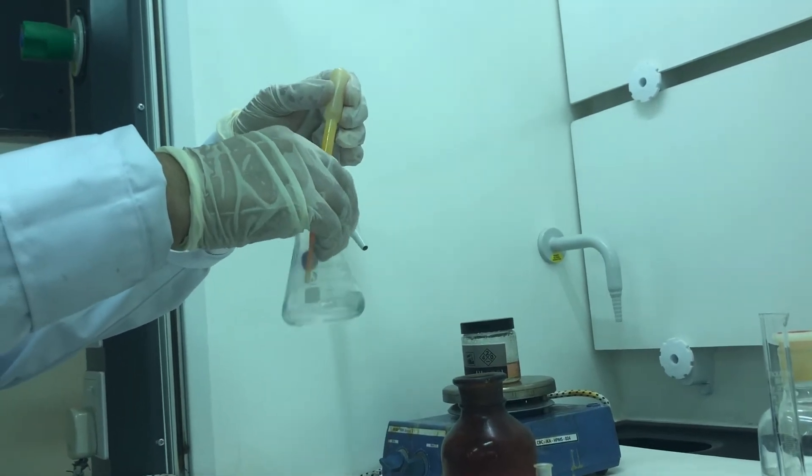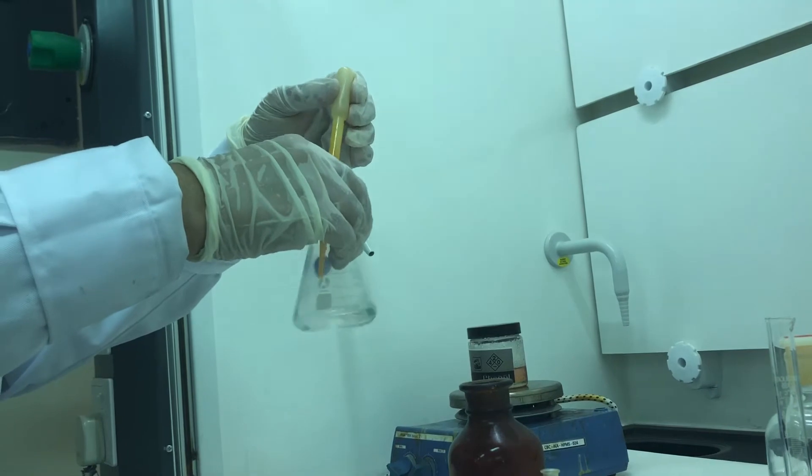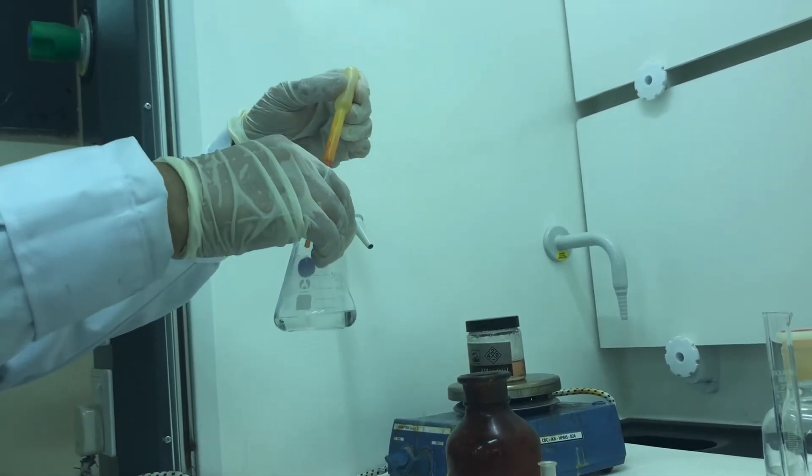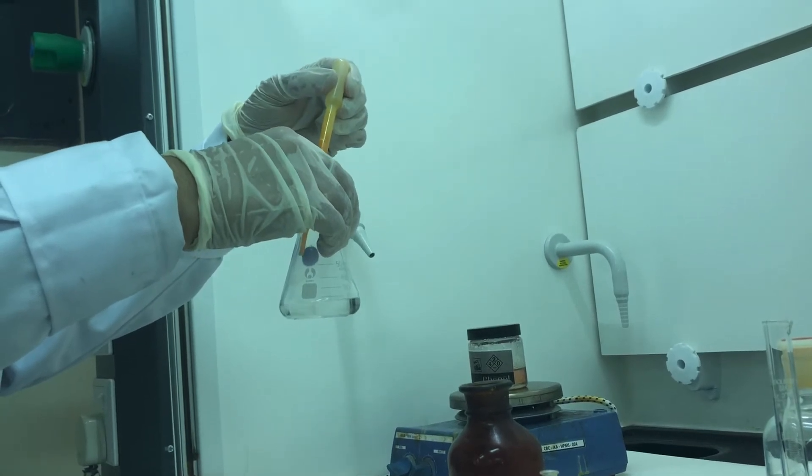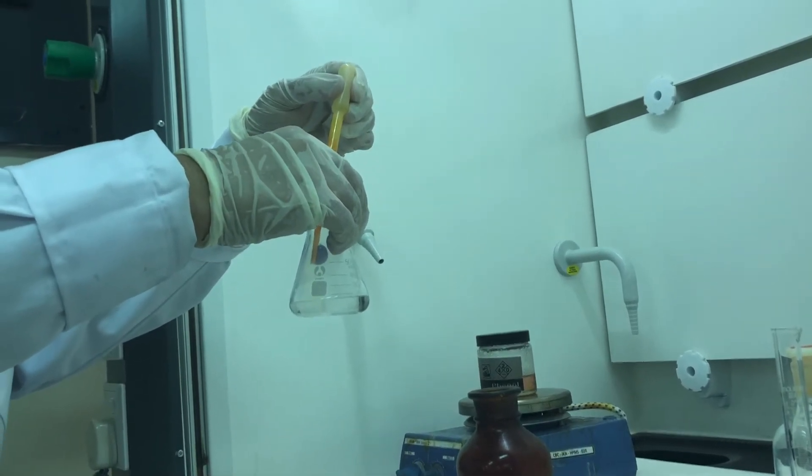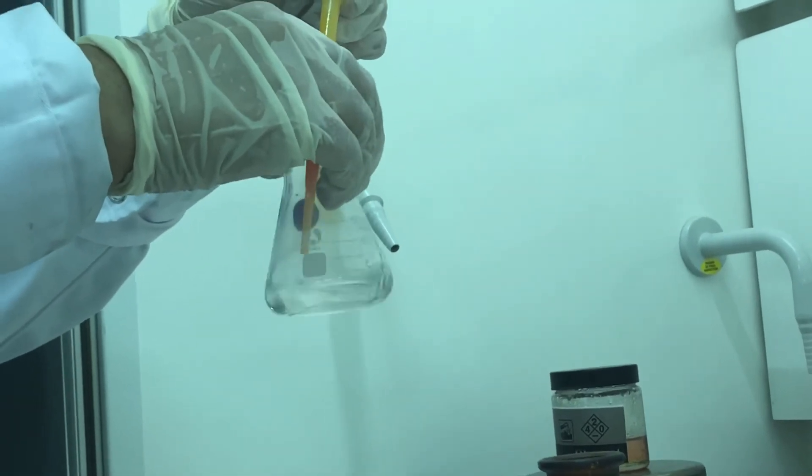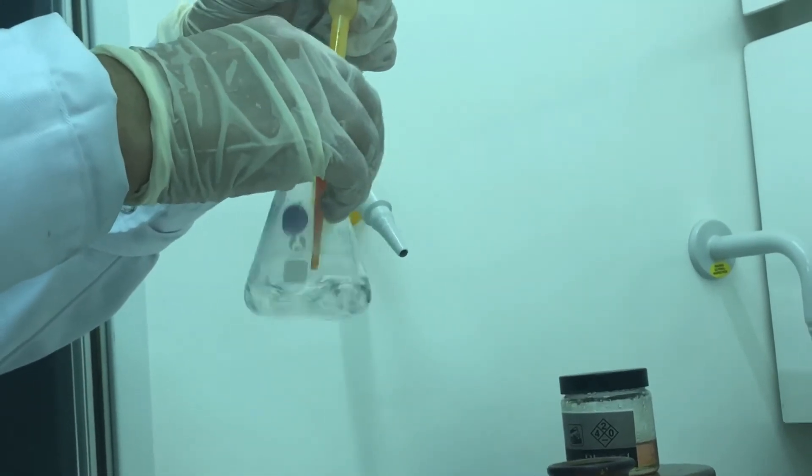So you can see the white solid is formed. But still, we need more excess of bromine to form the product.